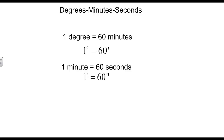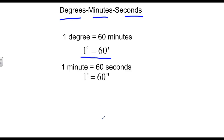Some degree notation that we rarely ever use, but that's used oftentimes in nautical and military-type venues, is something called degrees, minutes, and seconds. In this case, one degree is equivalent to 60 minutes, notated by a minute being like a foot sign. And then one minute is equivalent to 60 seconds, seconds being the almost quotation-looking mark. We're going to take and change some decimal degrees into this degrees, minutes, and seconds notation.